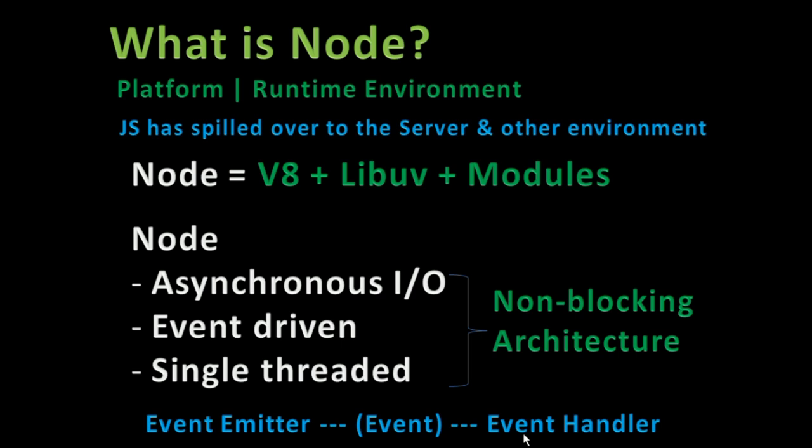Node is a runtime environment that allows you to run JavaScript outside the browser. I normally see Node as three things: the V8 engine, libuv, and Node modules. The V8 engine is the JavaScript engine that compiles JavaScript to machine code. Libuv is the asynchronous library inside Node. Then we have modules that help you build server-side applications, systems applications, or network applications.